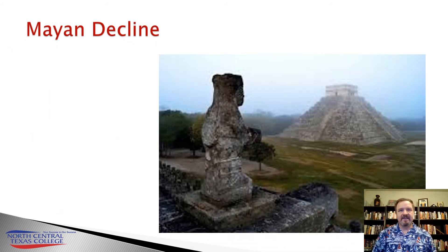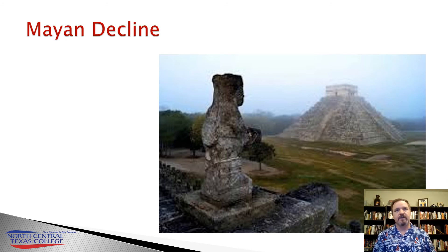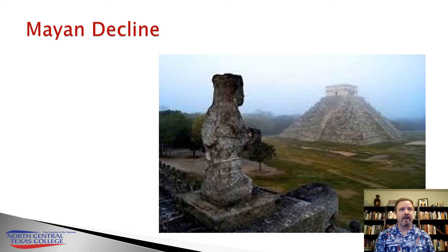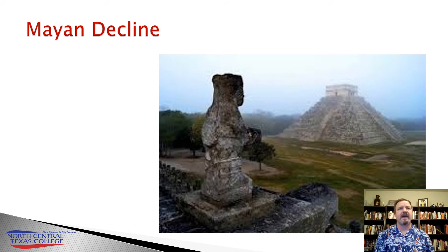Around the eighth and ninth centuries, classical Mayan civilization began to go into decline. The reasons for this are various and debated. Theories include overpopulation, over-cultivation of the land, drought, erosion, deforestation, warfare, and internal rebellions. It's probably a combination of these factors.